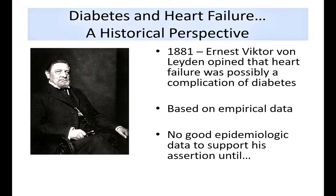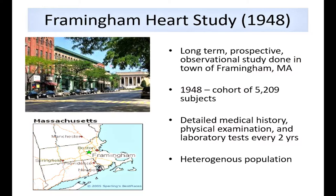It wouldn't take long before epidemiologic data emerged. The most important was the Framingham Heart Study, which defined the relationship between risk factors and cardiovascular disease. Commenced in 1948, it studied approximately 5,000 subjects from a town of about 60,000 in Framingham, Massachusetts — a long-term prospective observational study. Subjects had baseline history, physical examination, and lab work, then returned approximately every two years for about 30 years, enabling establishment of associations between risk factors and cardiovascular disease.